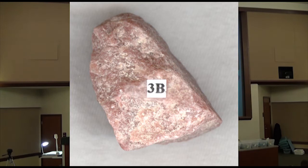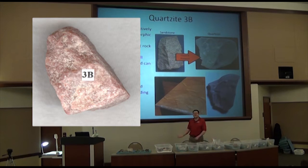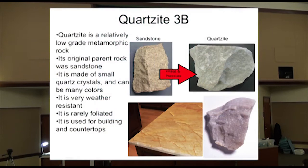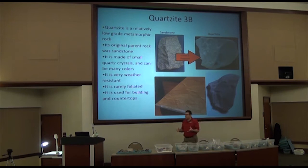Next, let's talk about quartzite — grab sample 3B. The parent rock for quartzite is sandstone, because sandstone is almost always made out of quartz sand and is usually pretty pure. With enough pressure, sandstone becomes quartzite. It's considered relatively low to middle grade. Sandstone comes in tons of colors because of other minerals, oxides, or chemicals mixed in, and those carry through into the quartzite.